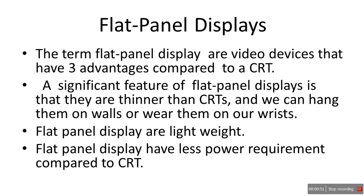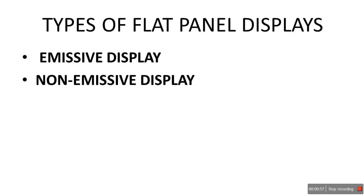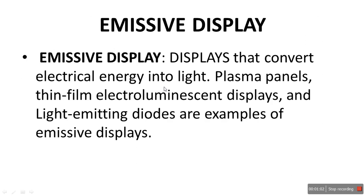There are two types of flat panel displays: emissive display and non-emissive display. Emissive displays are displays that convert electrical energy into light. Plasma panels, thin film electroluminescent displays, and light emitting diodes are examples of emissive displays. Basically, they don't require any external light source — that's what emissive display means.